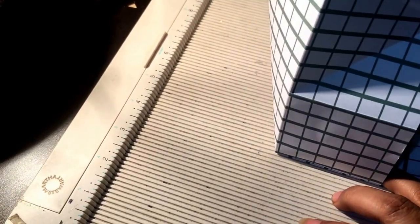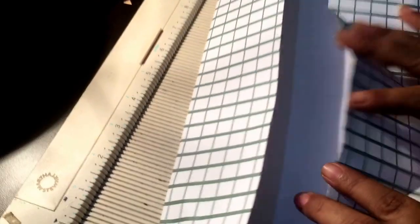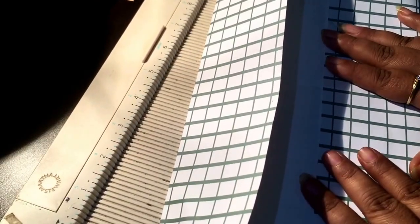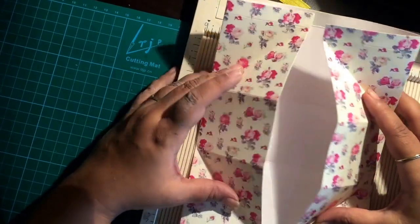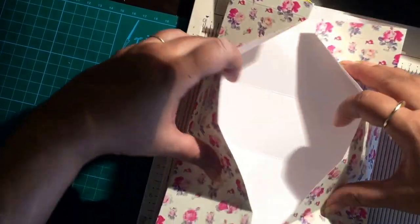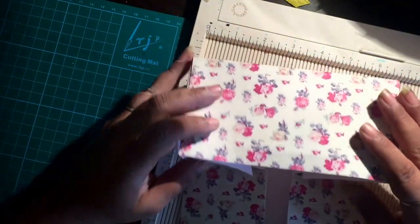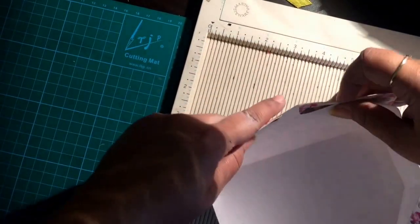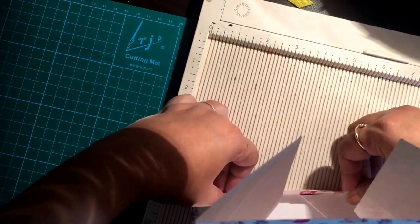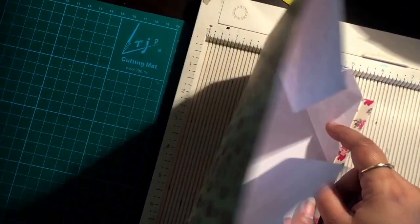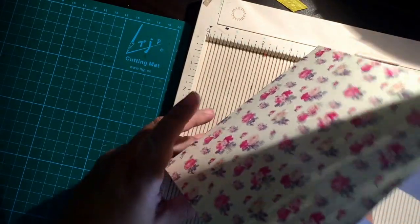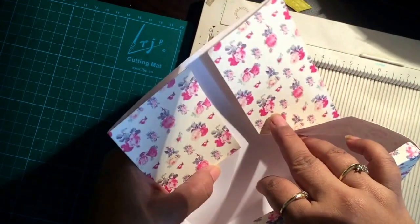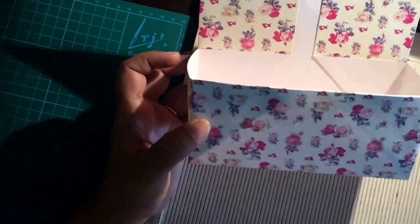Same on the other side. So I will come back with all the scores done on different paper and we'll take it forward from there. Okay, I am back here with all the scoring lines done, so we have created these flaps here. This is the basic structure of our box. All we need to now do is go ahead and glue the pieces. We just need to adhere it like this and like this.